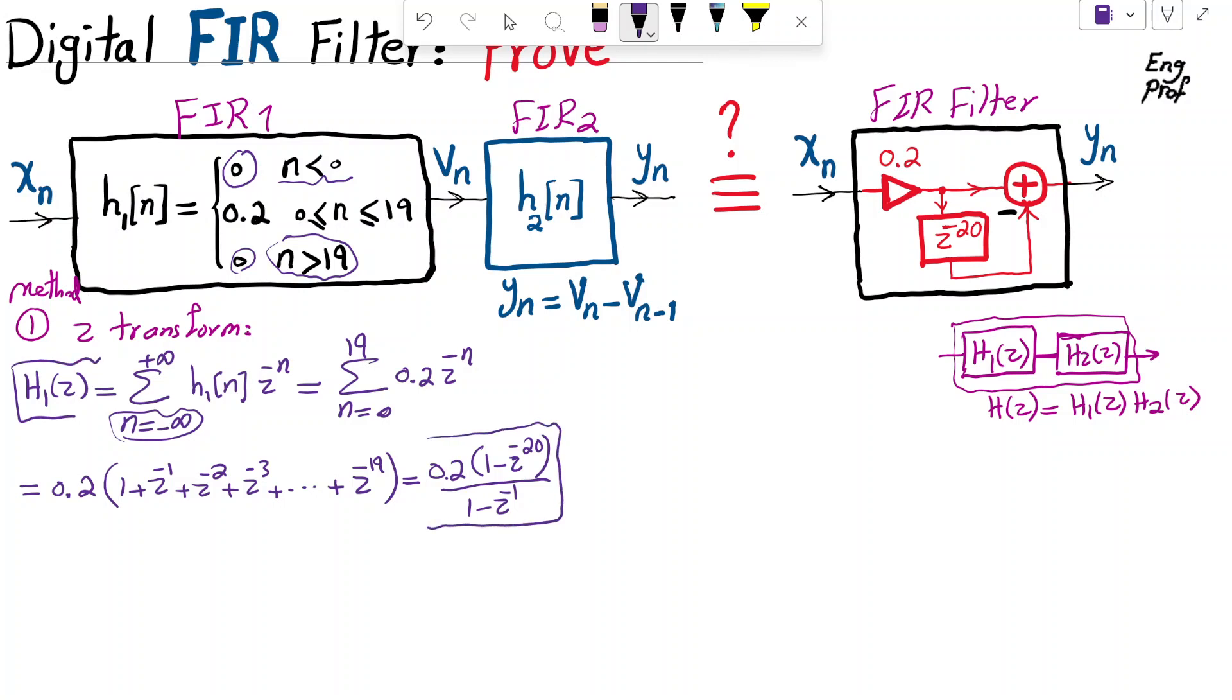Now, what about H2 of Z? Basically, the Z transform of the second system that has this difference equation. So this is the difference equation of the second FIR system that relates output Y of N to input V of N and its past values of samples.